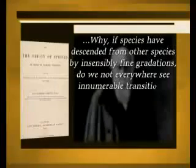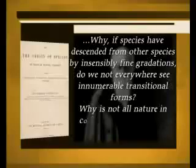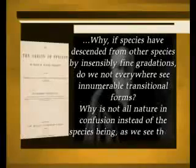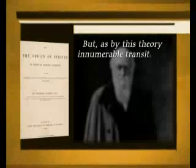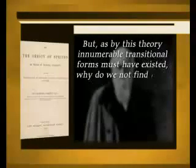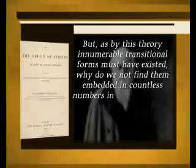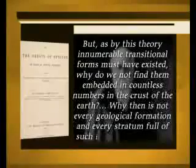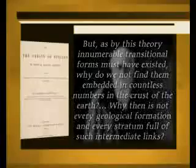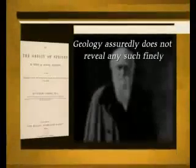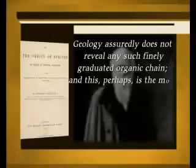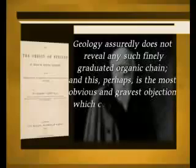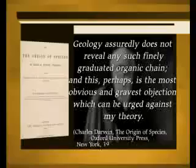'Why, if species have descended from other species by insensibly fine gradations, do we not everywhere see innumerable transitional forms? Why is not all nature in confusion instead of the species being, as we see them, well defined? But as by this theory innumerable transitional forms must have existed, why do we not find them embedded in countless numbers in the crust of the earth? Why then is not every geological formation and every stratum full of such intermediate links? Geology assuredly does not reveal any such finely graduated organic chain, and this perhaps is the most obvious and gravest objection which can be urged against my theory.'